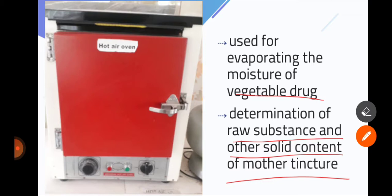The moisture of vegetable drug will also be put in the hot air oven and its extra moisture content will be removed from hot air oven to evaporate the moisture content.